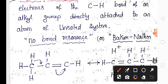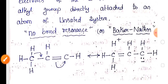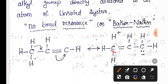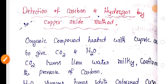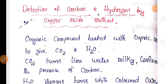Hyperconjugation is also called no-bond resonance, or the Baker-Nathan effect. This is important for two marks. Another important concept for three marks is the detection of carbon and hydrogen in an organic compound using copper oxide.